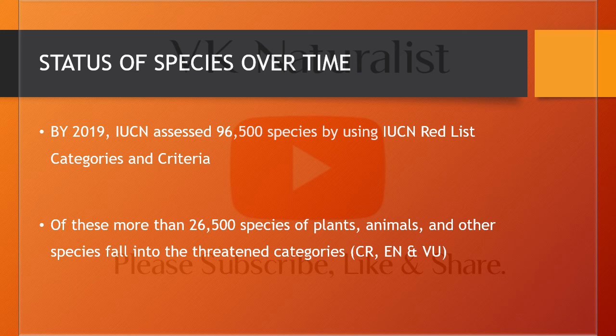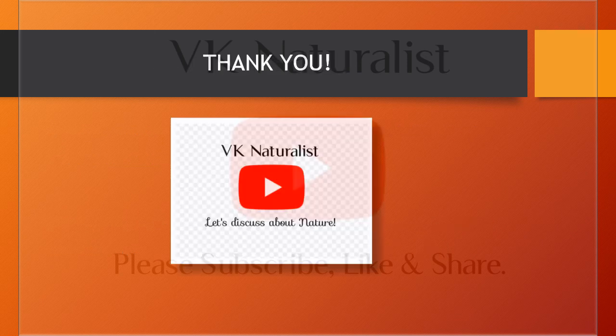By 2019, IUCN had assessed 96,500 species using IUCN categories and criteria. Of these, 26,500 species of plants, animals, and other organisms are included in the threatened categories. Thank you.